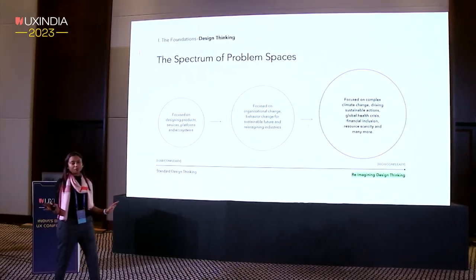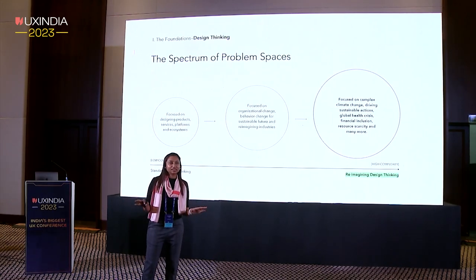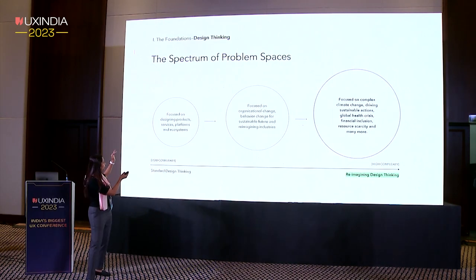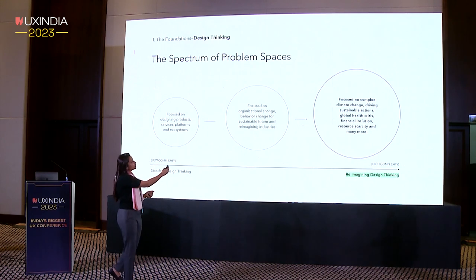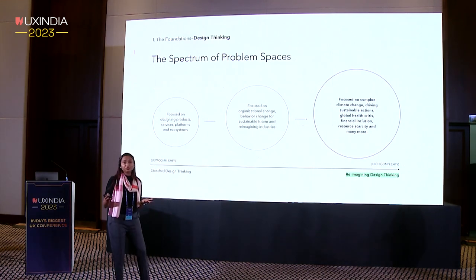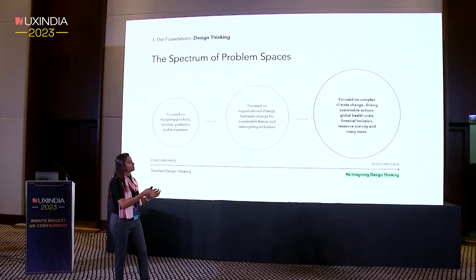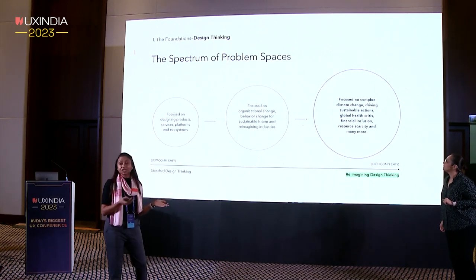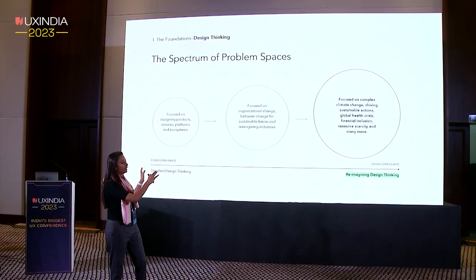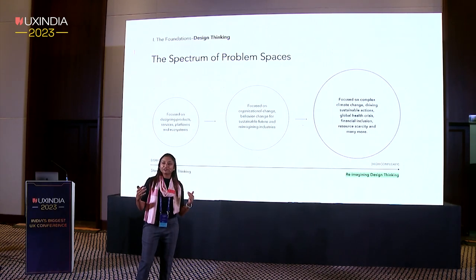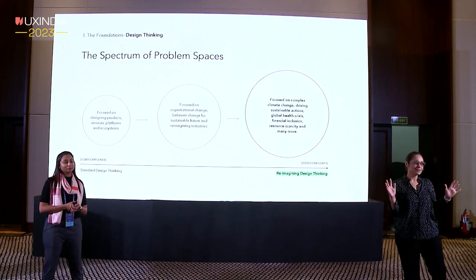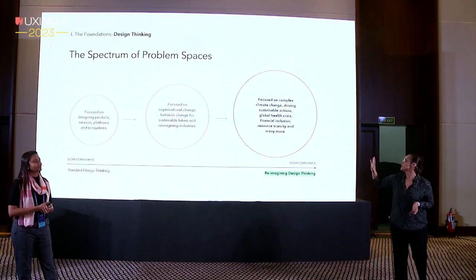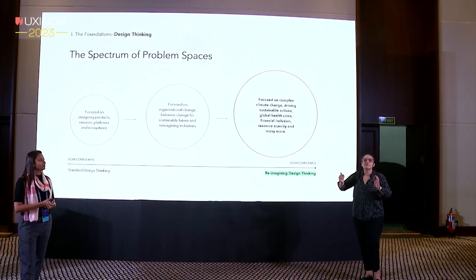Talking about the spectrum of problem spaces and design thinking — we all know what design thinking is. We think we are right now here: standard design thinking focused on designing products, services, platforms. But the problem spectrum is going towards high complexity. There are questions being asked about organizational change, behavior change, sustainable future, complex climate change, driving sustainable actions, financial inclusion — very high complexity problems. We really think that design thinking needs to evolve going ahead. Don Norman's book, Designing a Better World, talks about that: designers need a different toolkit. We're no longer just designing web or mobile applications — we're solving these wicked problems. And AI could be your friend to help you solve that.